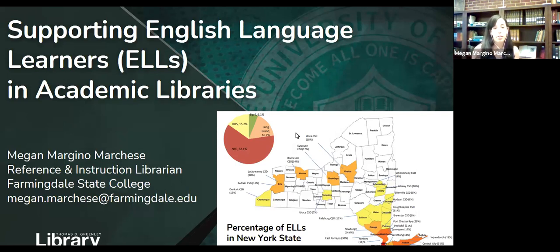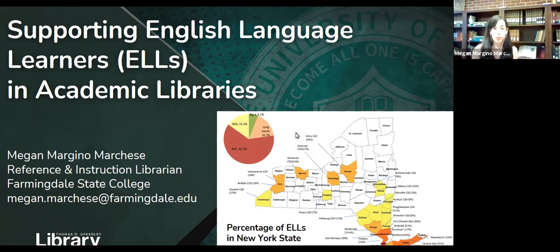Many academically competent ELLs were not able to master academic language acquisition before they graduated high school or before they tested out of an ENL program. I'd like to focus on Generation 1.5 because this topic is relevant to my institution. Farmingdale does not have a traditional ESL program, but many of our students are non-native English speakers, and I'm thinking this might also be relevant to some of you.